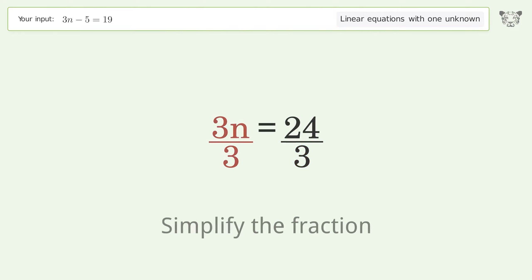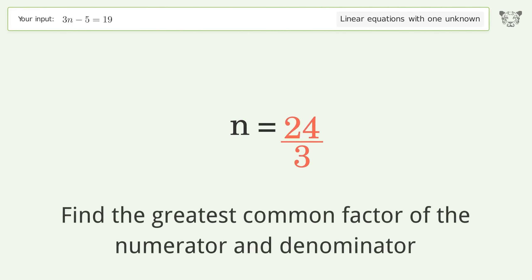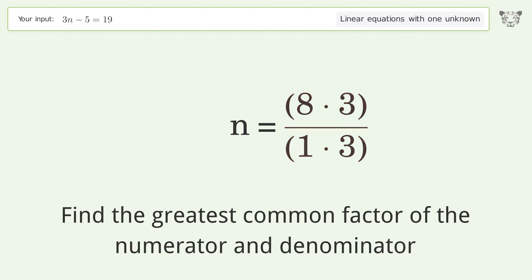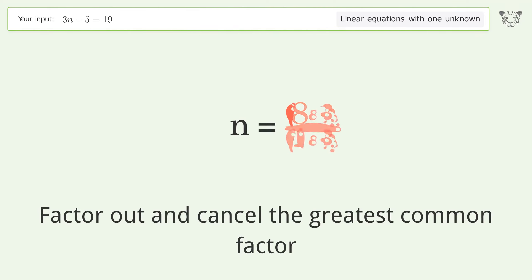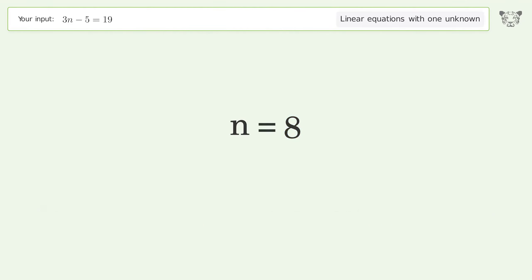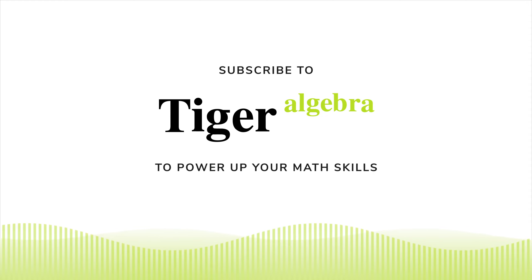Isolate n by dividing both sides by 3, then simplify the fraction. Find the greatest common factor of the numerator and denominator, then factor out and cancel the greatest common factor. The final result is n equals 8.